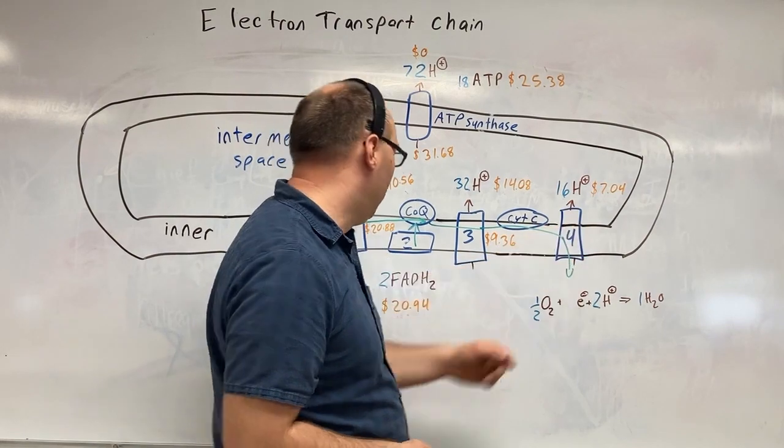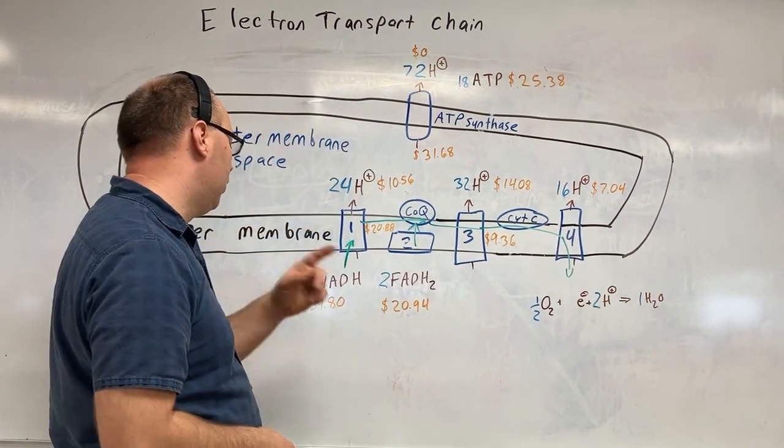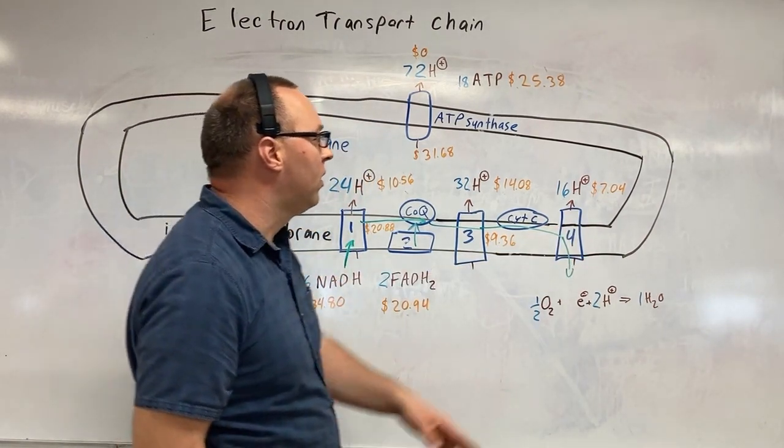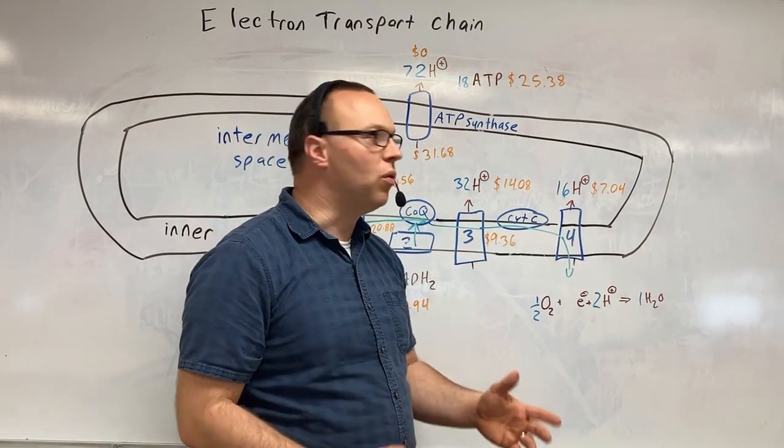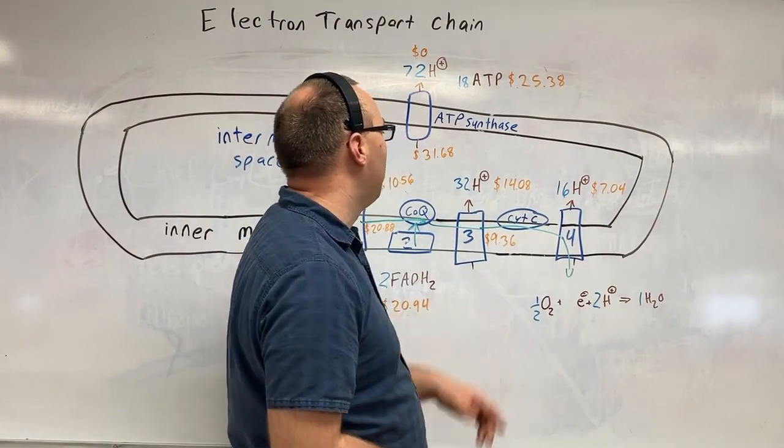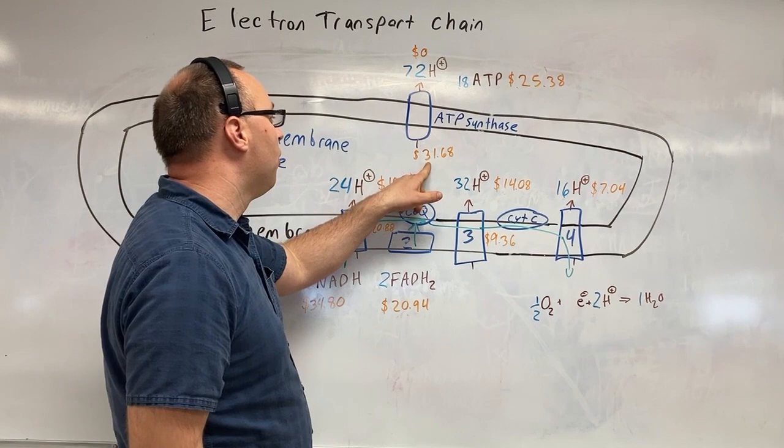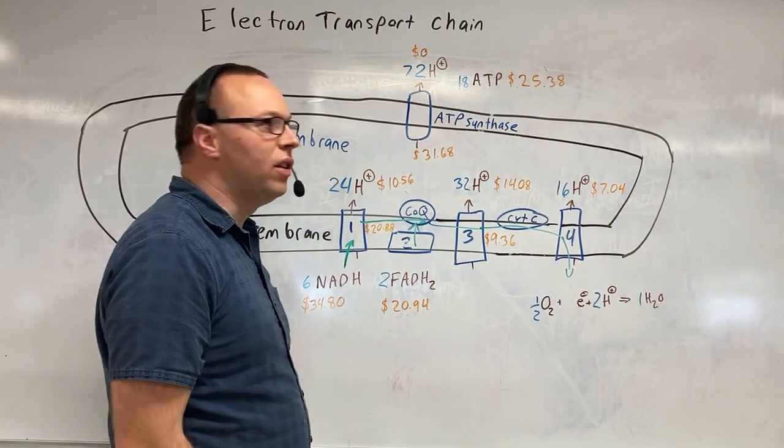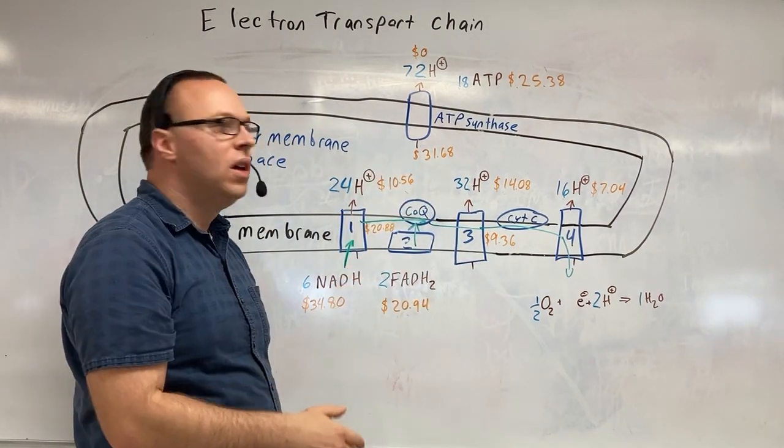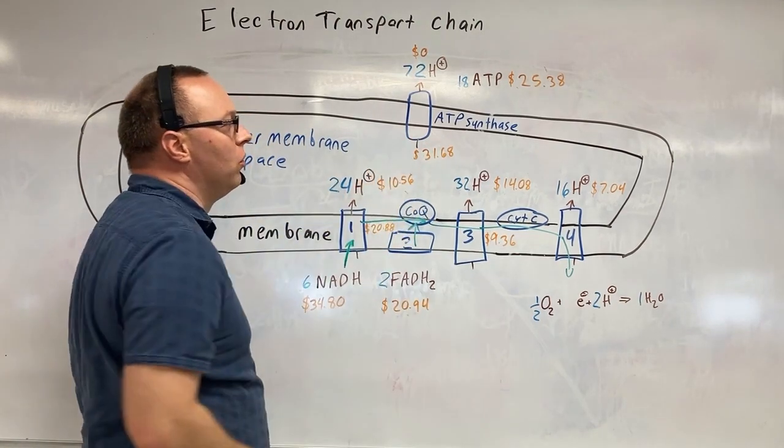And then we pump out only two per molecule of FADH and two per molecule of NADH. So that's going to be an additional $7.04 worth of energy that we've pumped out. So we've stored $31.68 worth of energy from glucose in the form of these acid particles.